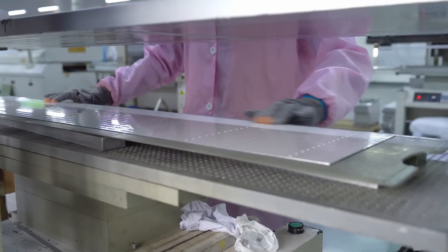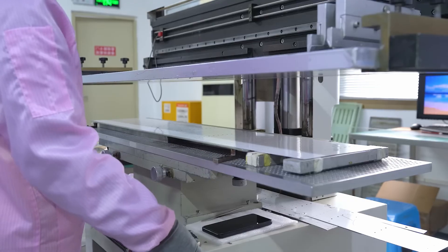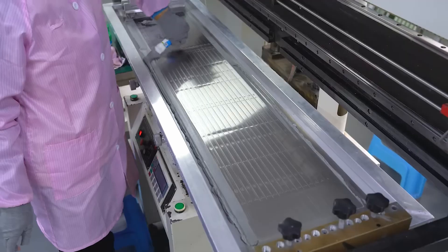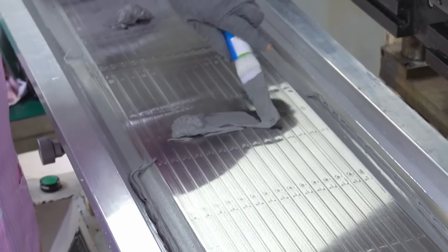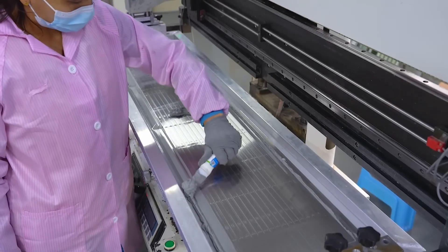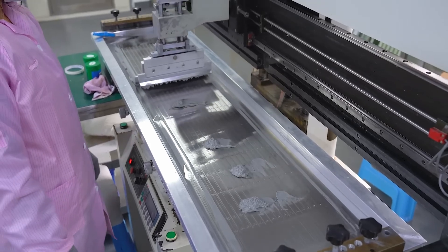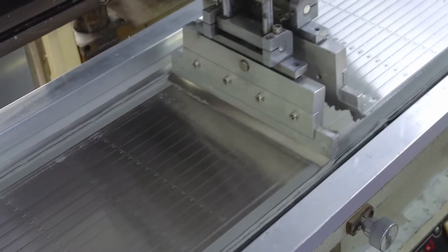The creation of LED backlights begins with the production of LED chips. These chips are manufactured using semiconductor wafers, typically made from gallium nitride. The wafer is processed through several stages, including doping, which introduces impurities to create a PN junction, essential for light emission.